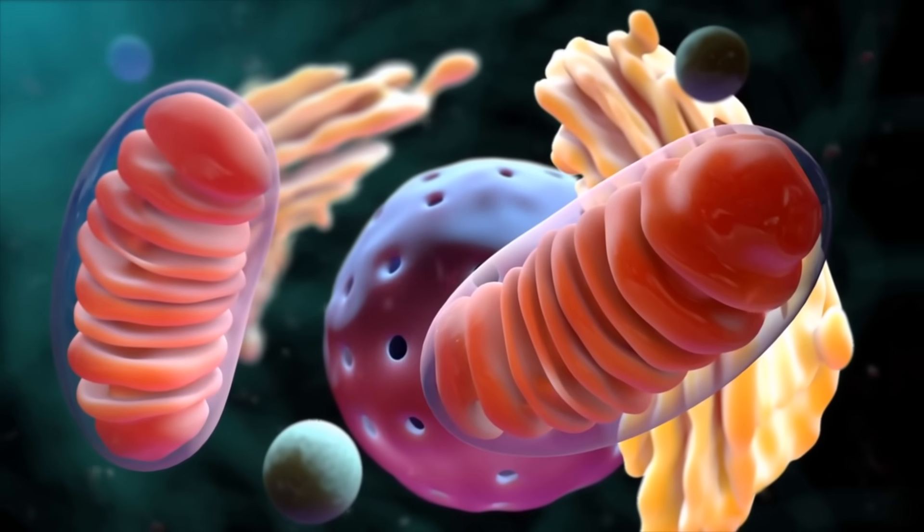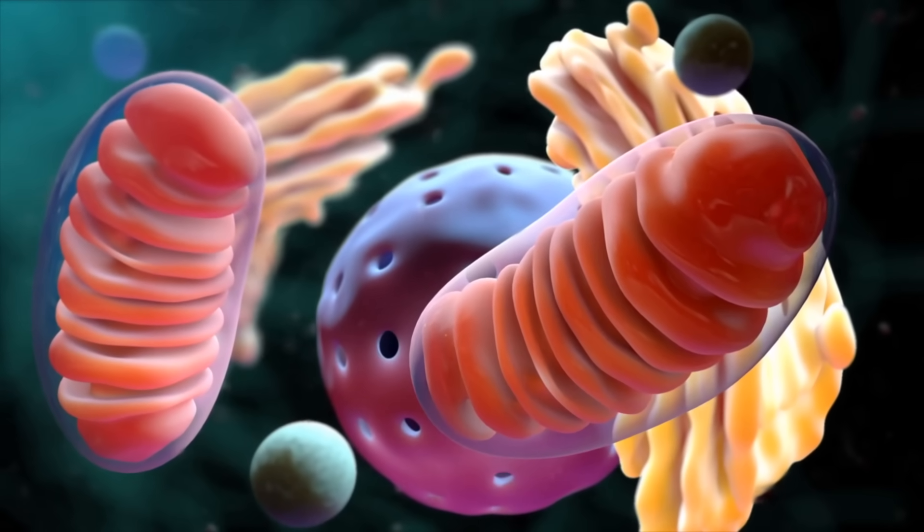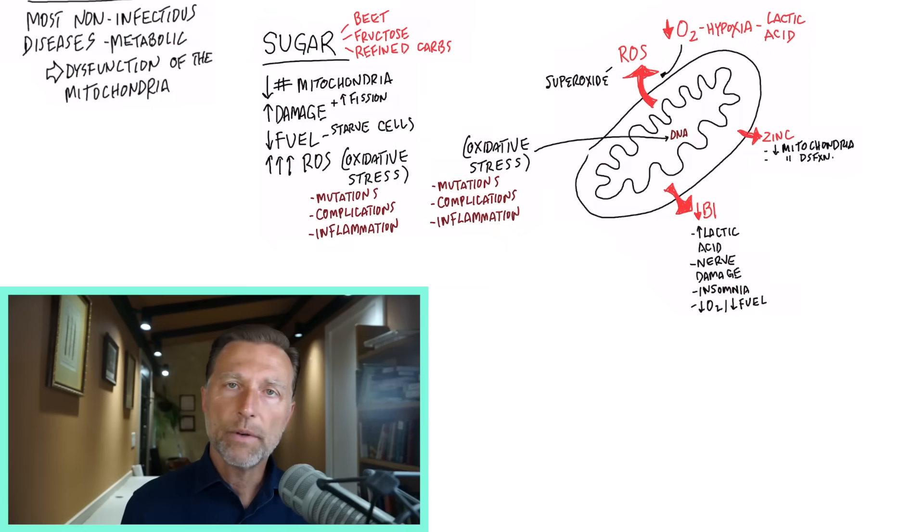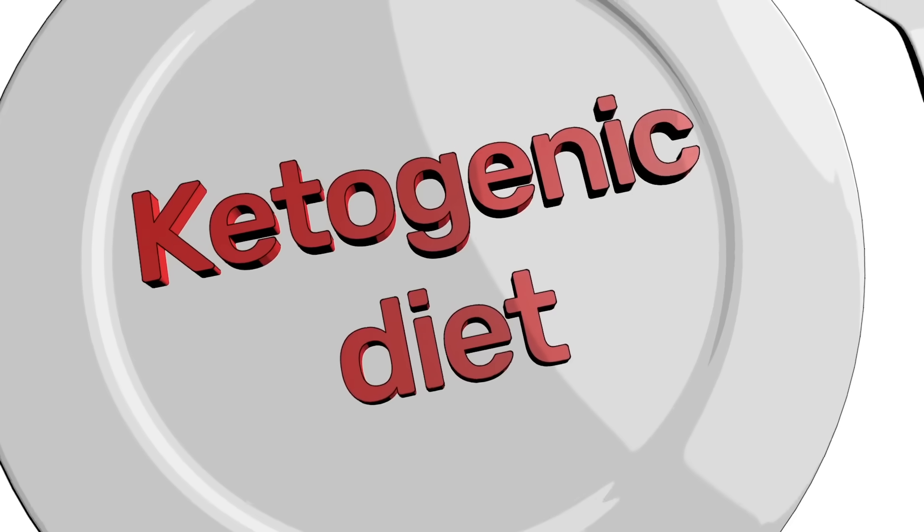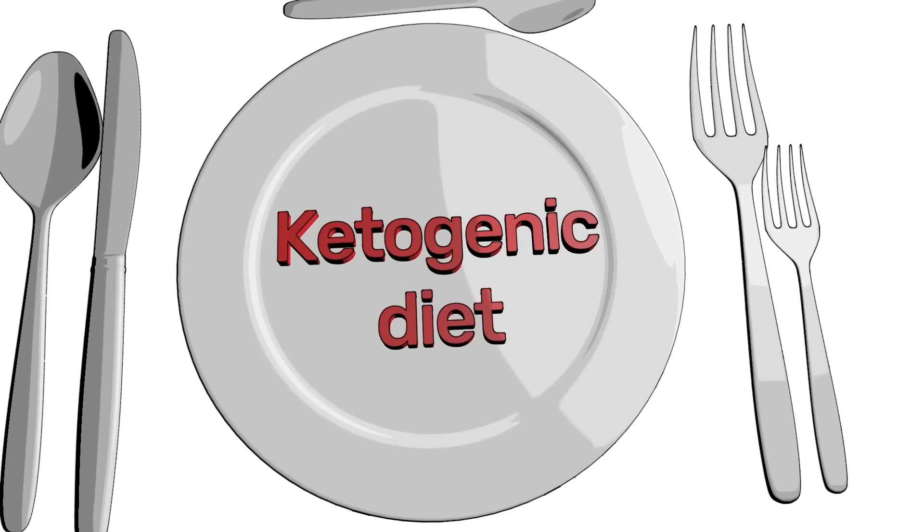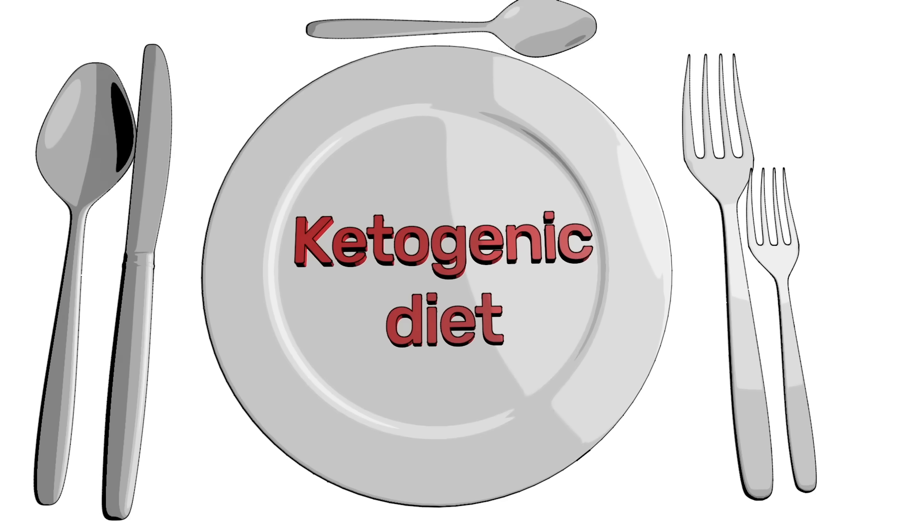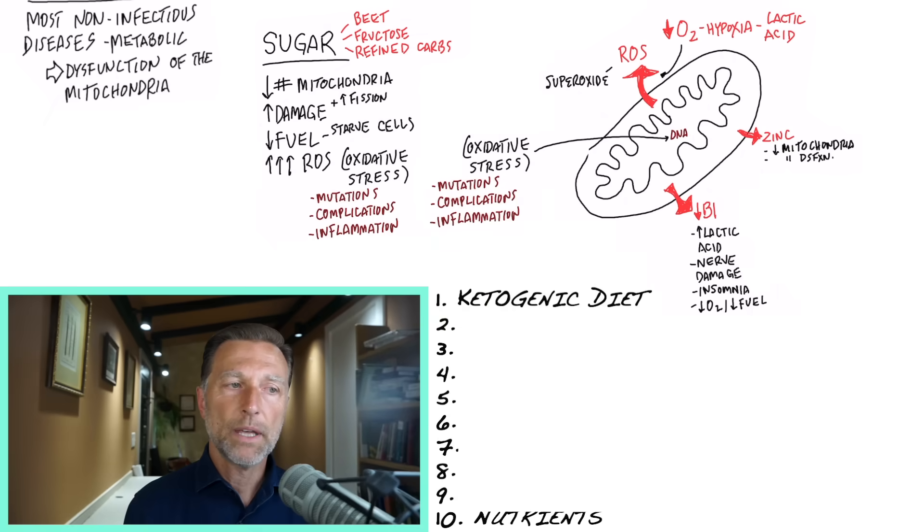So the question now is, what can we do to improve the mitochondria? Well, the number one thing you should do is go on a low-carb diet. It's called a ketogenic diet. Cut out sugar, cut out these refined carbs. You're going to feel better immediately. And you'll probably find that you won't be depleting your B1 anymore or your zinc anymore, and other nutrients that you won't be depleting anymore too.